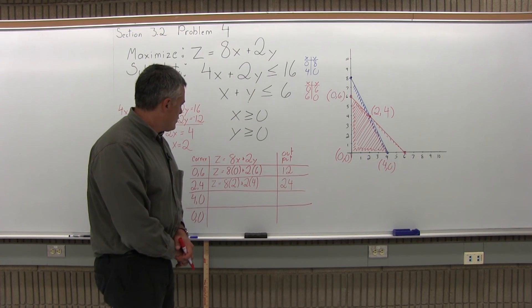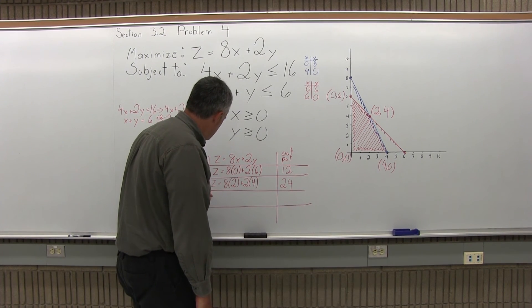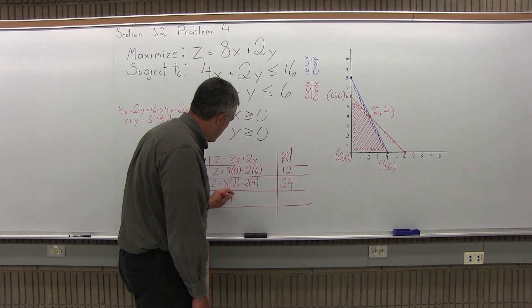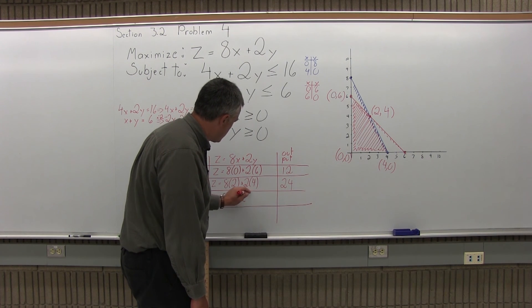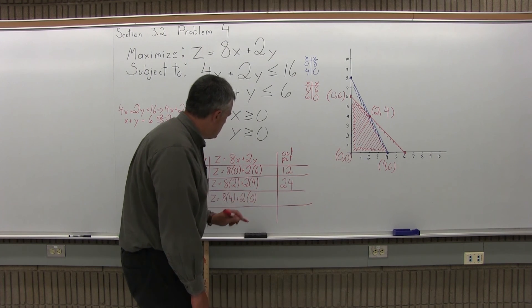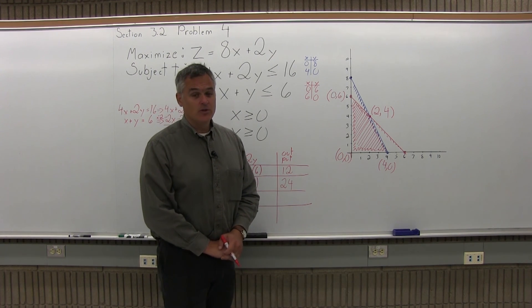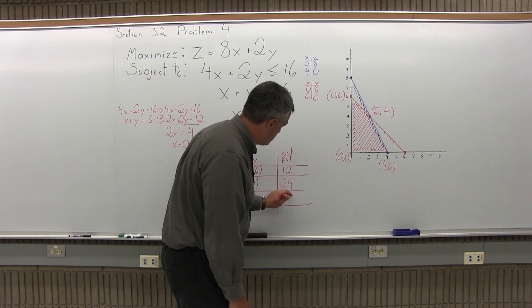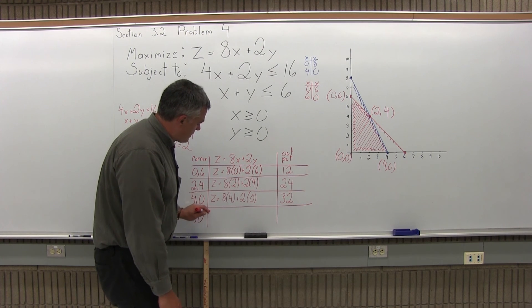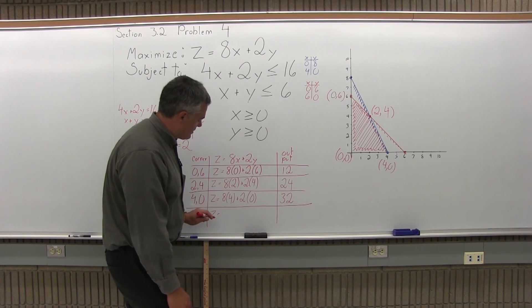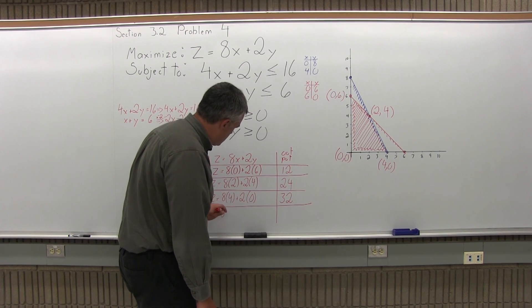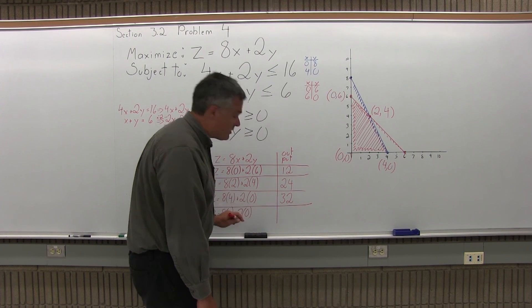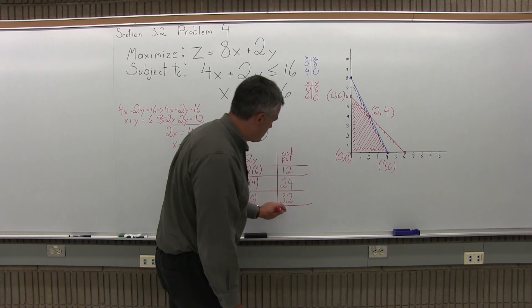The next corner point is (4, 0): z equals 8 times 4 plus 2 times 0, which gives 32 plus 0, so the output is 32. And finally, the corner point (0, 0) gives z equals 8 times 0 plus 2 times 0, which is 0 plus 0, so the output is 0.